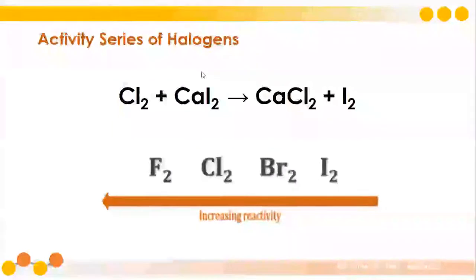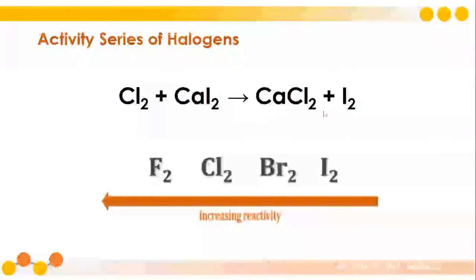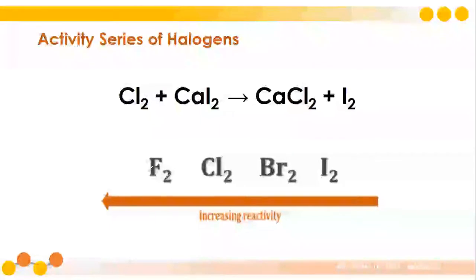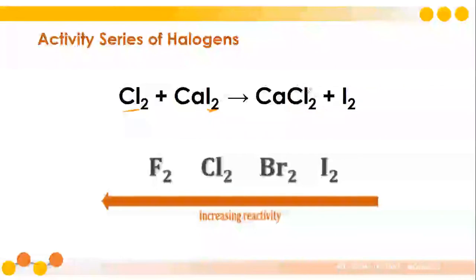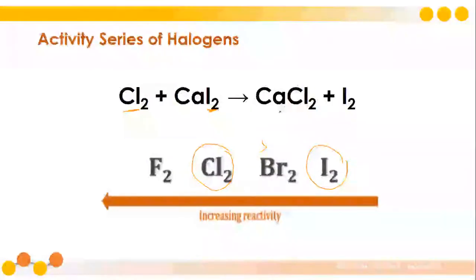We also have the activity series of halogens. Chlorine plus calcium iodide will produce calcium chloride plus iodine. Iodine is the least reactive while chlorine is the most reactive. The elements displaced are chlorine and iodine — chlorine replaced iodine. Looking at the reactivity series of halogens, chlorine is much more reactive than iodine; thus it can replace iodine from being paired with calcium.